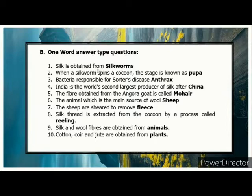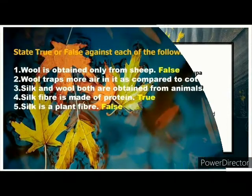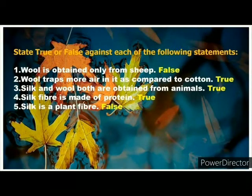Silk thread is extracted from the cocoon by the process called Reeling. Silk and wool fibers are obtained from Animals. Cotton, fur and jute are obtained from Plants — False. True or False: Wool is obtained only from sheep — False.